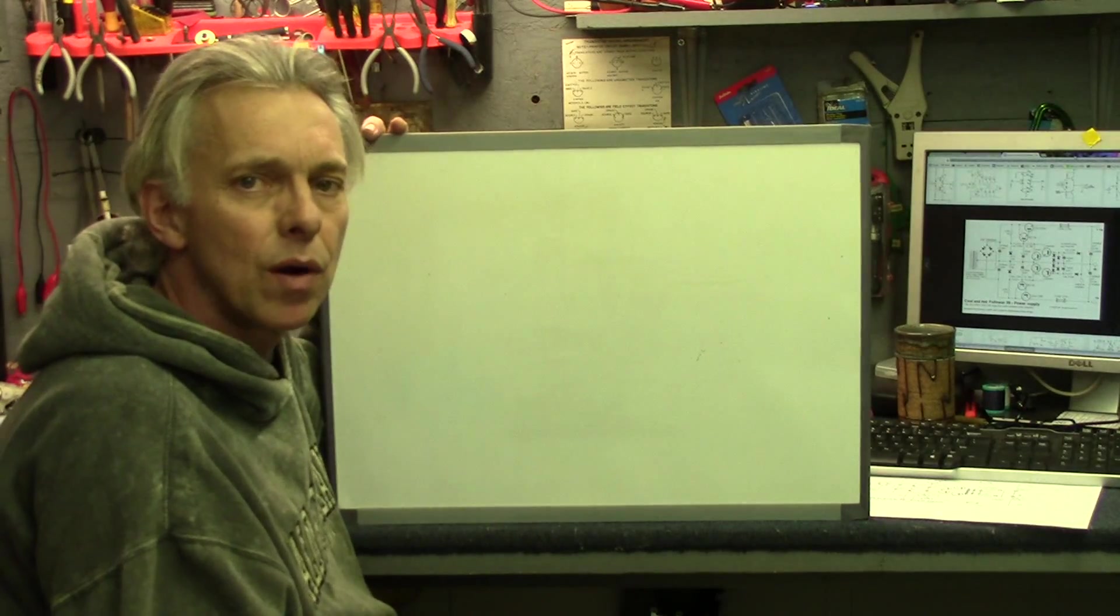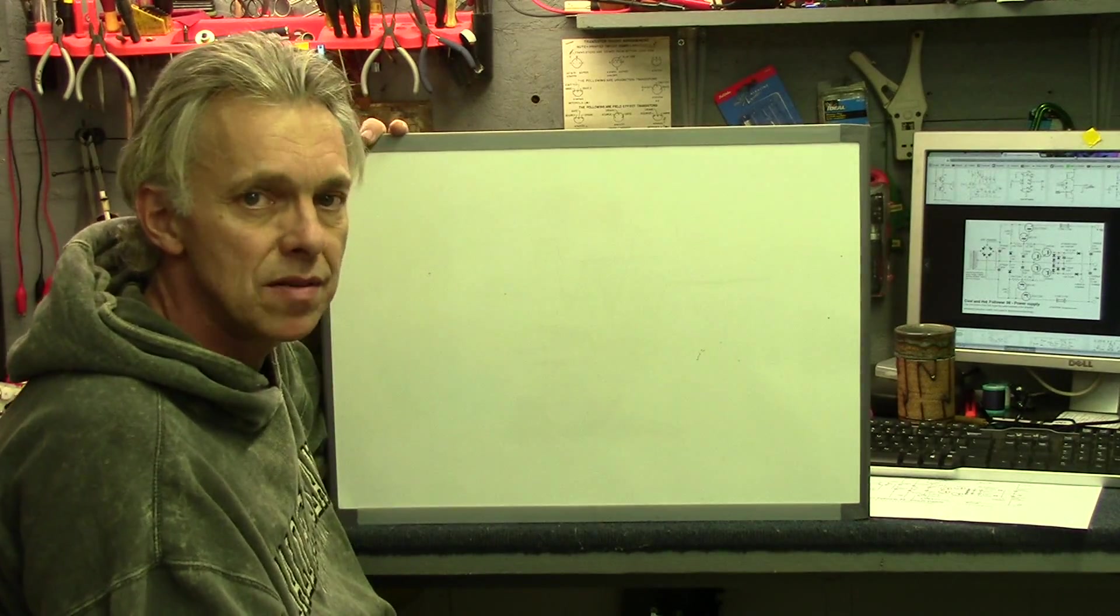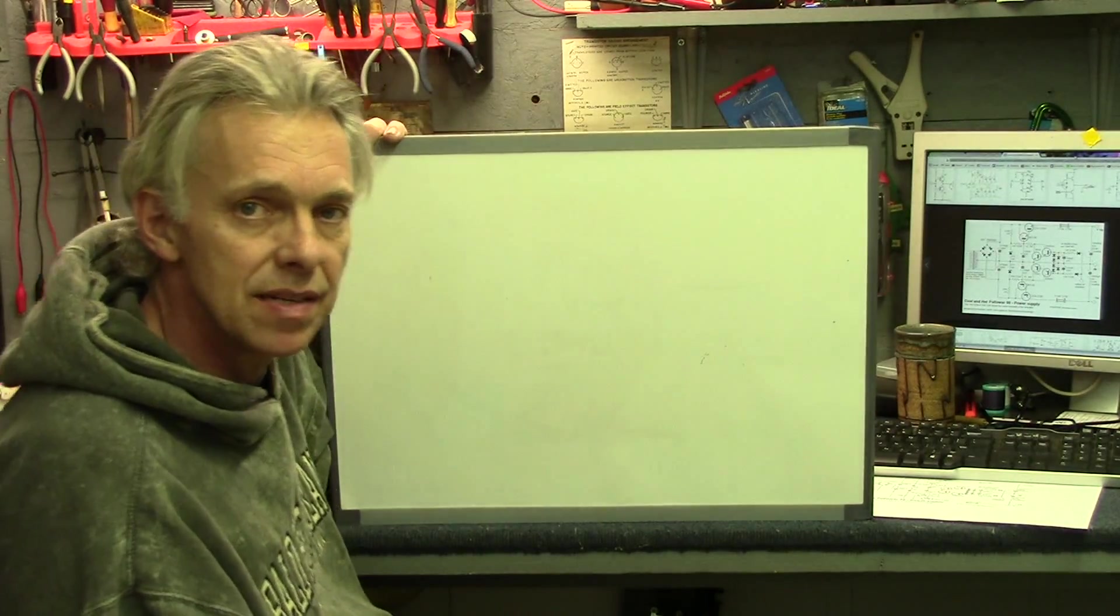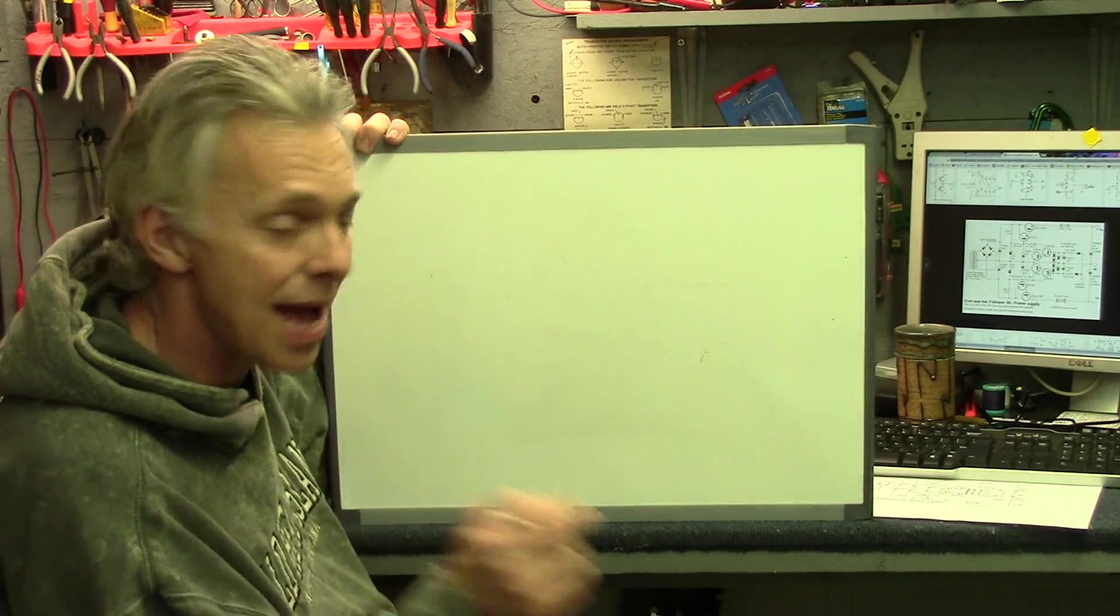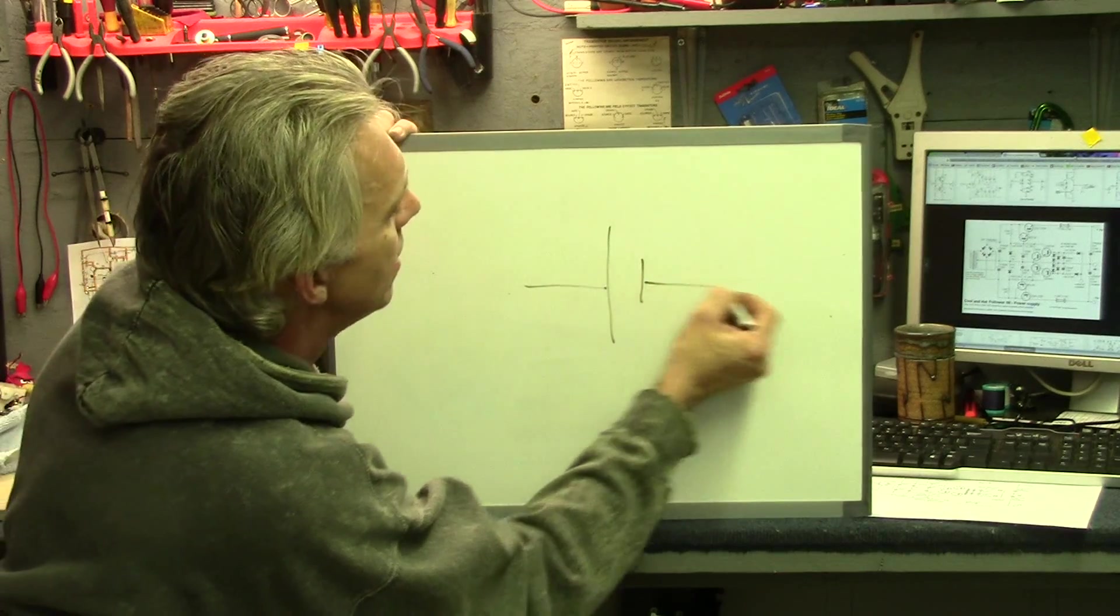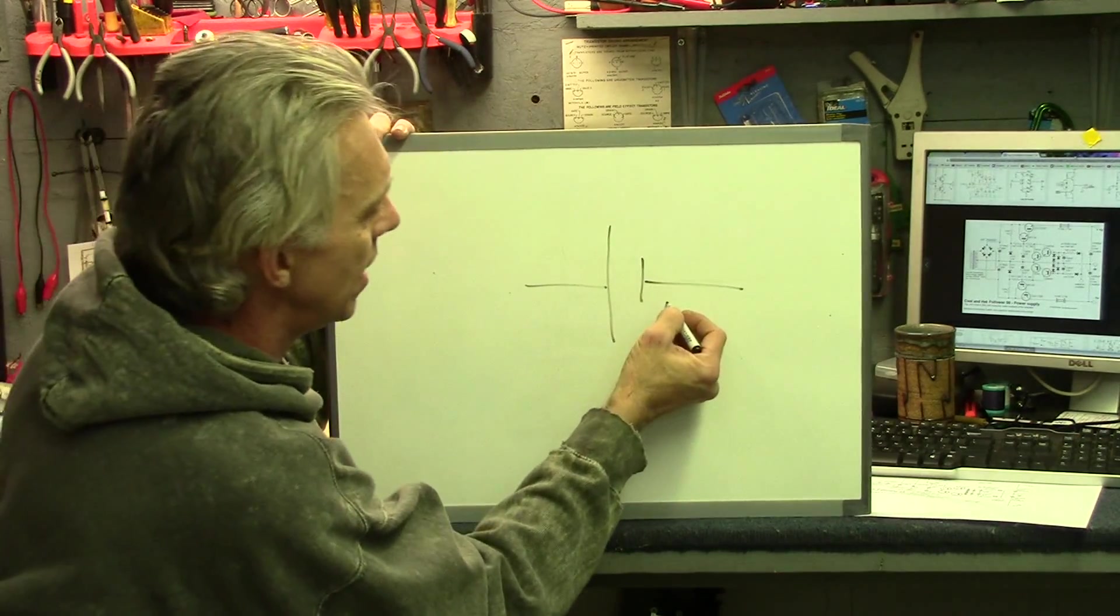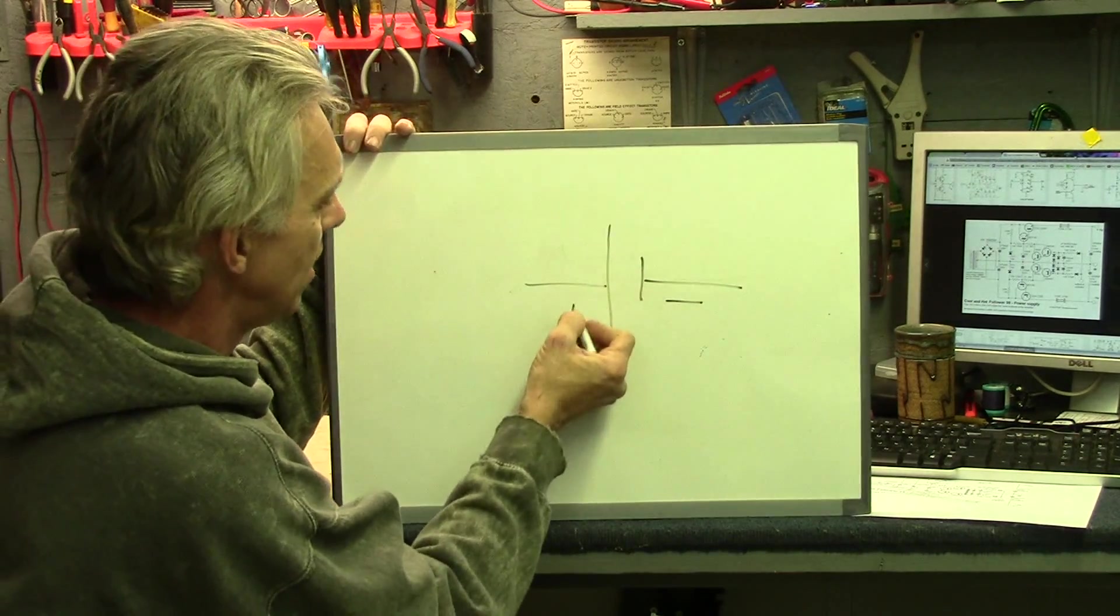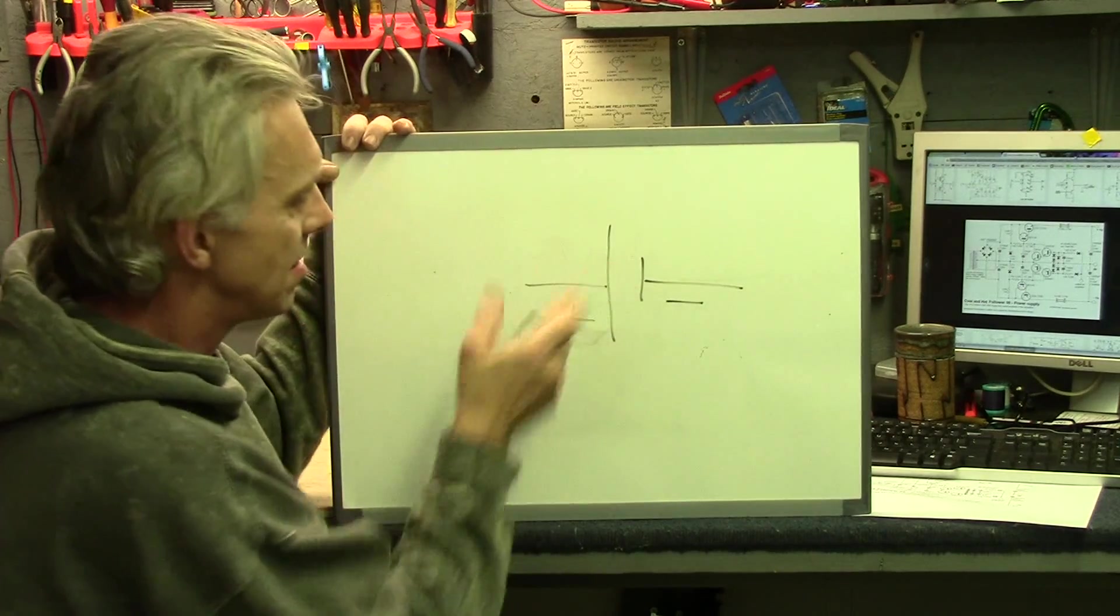Now, of course, without power, a circuit doesn't do too much. Sometimes it can, but most of the time it needs a power supply. There's a symbol for batteries that looks like this: a smaller line and something like that. The smaller line is the negative, the bigger line is the positive. That's the symbol for a battery. That's a single cell.